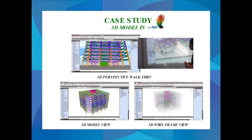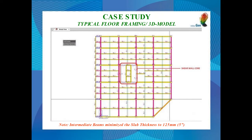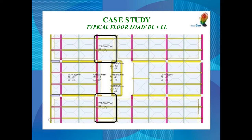For the 3D model, we use MidasGen, where you can take advantage of the 3D perspective walkthrough while interacting with architects during technical meetings. We can produce 3D model views and 3D wire views easily. This is the typical frame model of the building, generated automatically with MidasGen. By providing intermediate beams between columns and girders, we were able to minimize the slab thickness to 125 mm or 5 inches. The loading was automatically generated within the MidasGen environment.